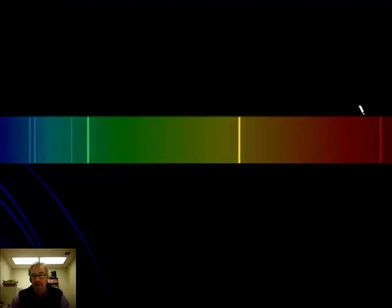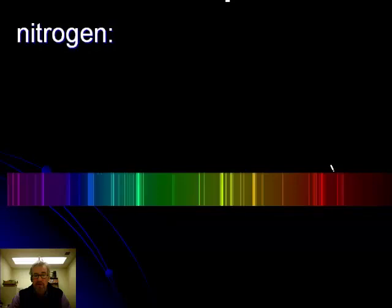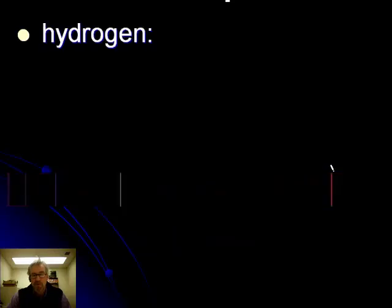This line spectrum is like a fingerprint for different substances — we can detect what elements are present even in faraway stars by analyzing their light. Helium, nitrogen, and mercury each have their own characteristic spectra. Mercury vapor lights look much whiter as a result. The interesting one is hydrogen — it has only five visible lines, and even one is invisible to some people because it's very close to ultraviolet. The question is: do these five lines correspond to five different positions of the electron?